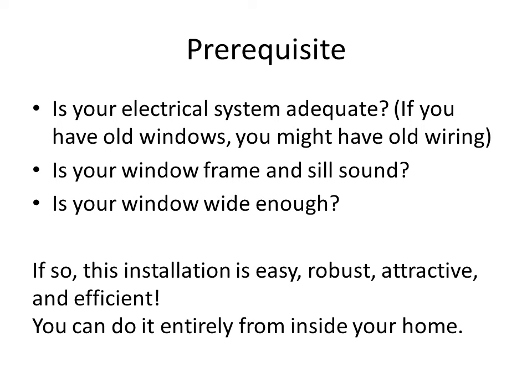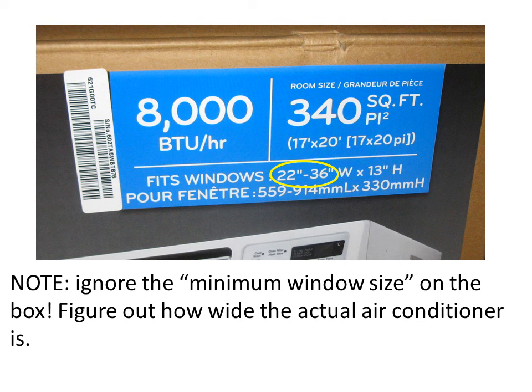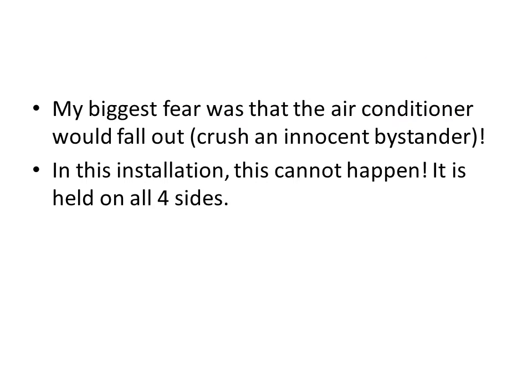If your windows meet these prerequisites, the installation is very easy, robust, and attractive. I used an LG 8000 BTU air conditioner, but the same technique should work with many other types as long as the air conditioner is wide enough. The box states a minimum window width of 22 inches, but my window is actually smaller. The important thing to understand is that the air conditioner itself is smaller than stated on the box — in this case about 19.5 inches wide, and my window opening is about 20.5 inches wide, so it fits with a little room to spare.